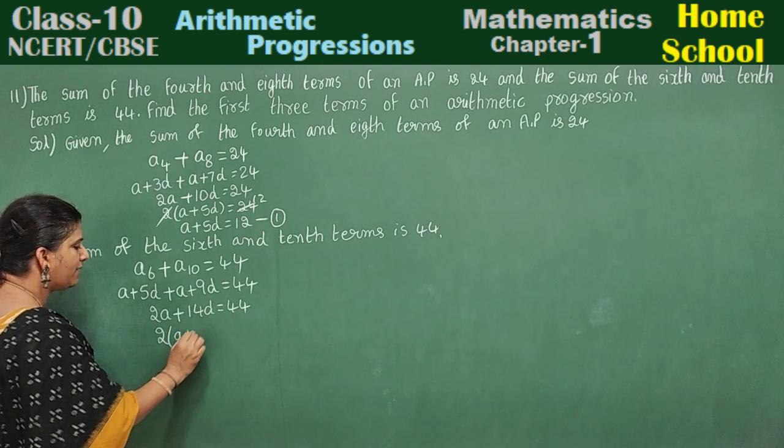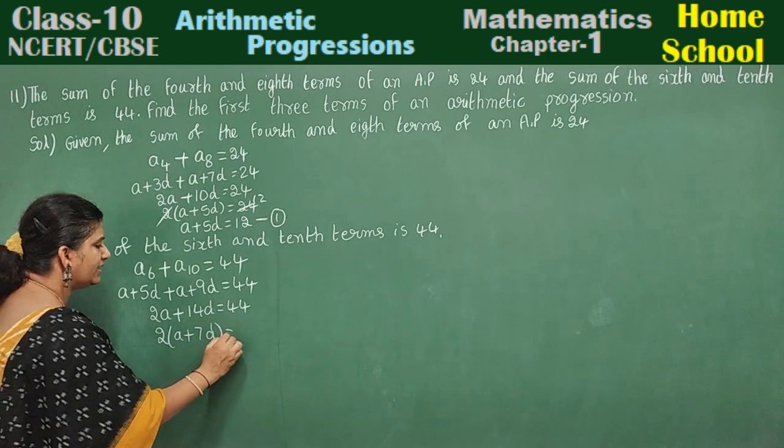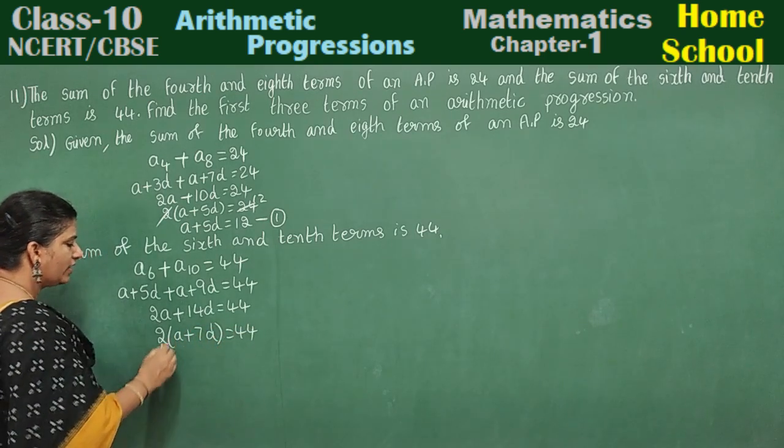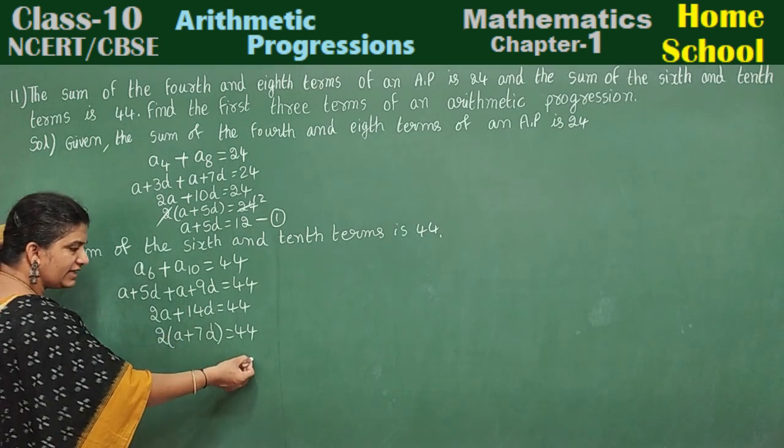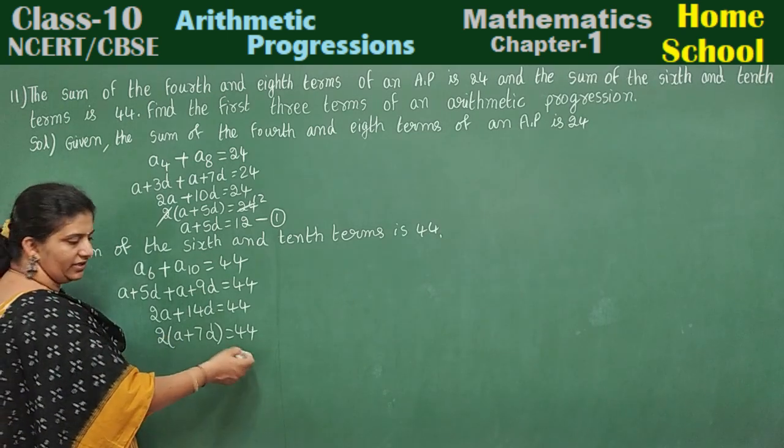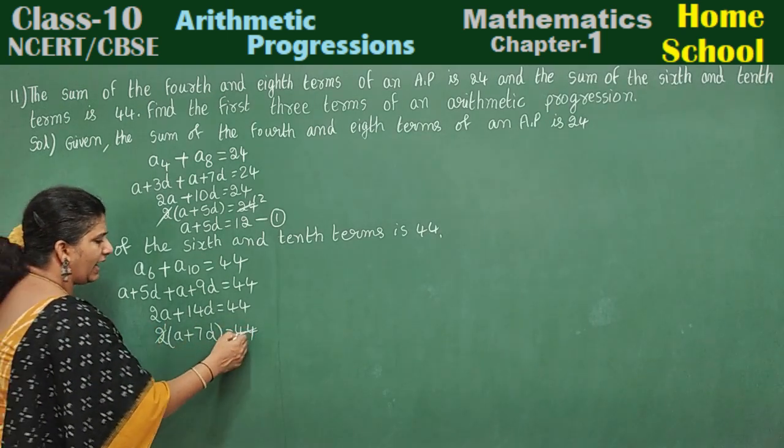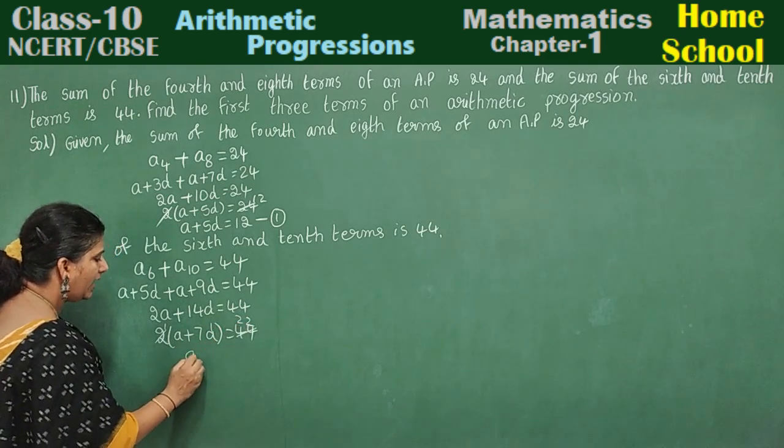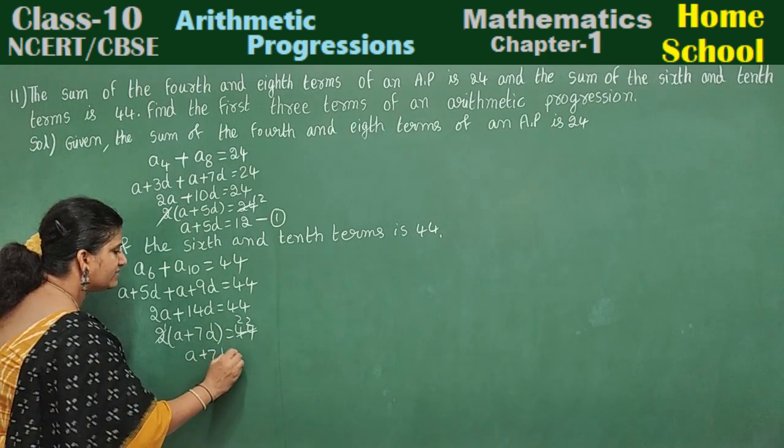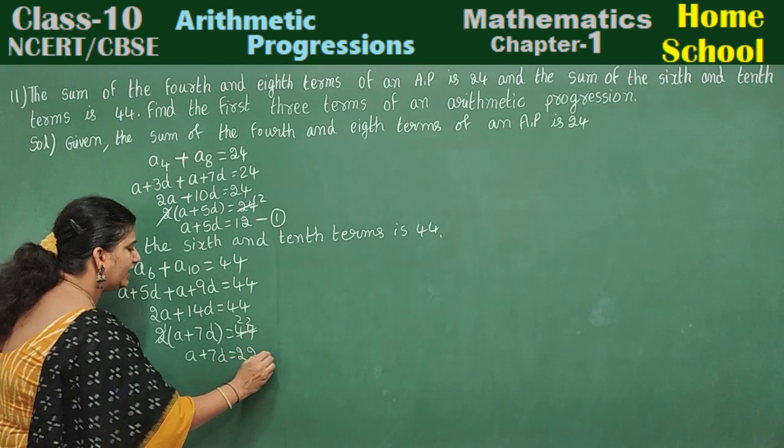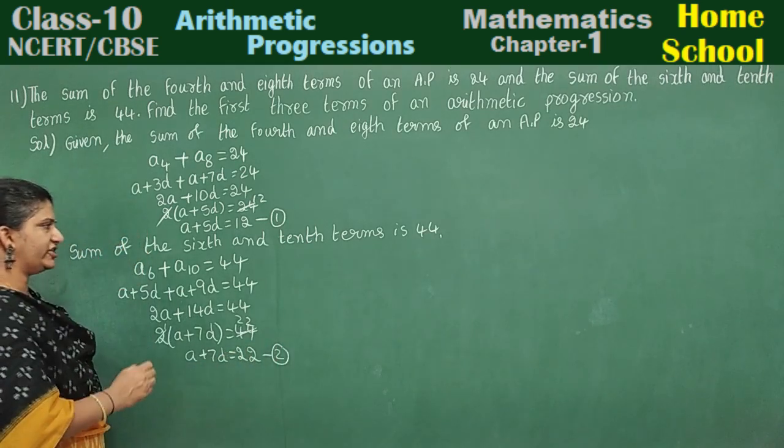Take out 2 common: A plus 7D equals 44. Divide by 2: A plus 7D equals 22. Mark as second equation.